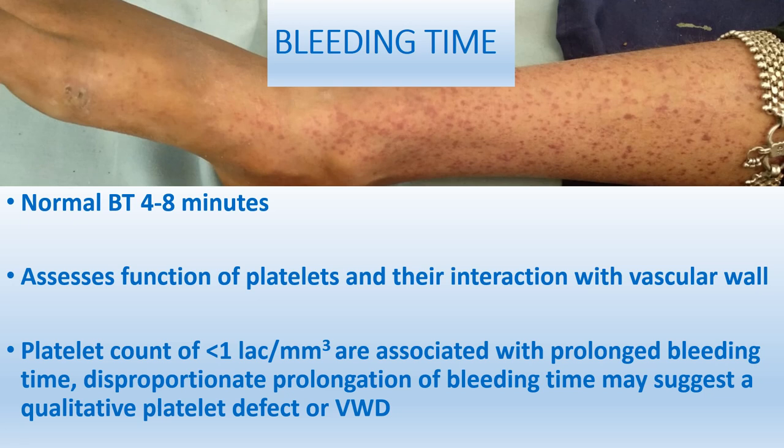Bleeding time is a bedside test with a normal value of 4 to 8 minutes. It assesses the function of platelets and their interaction with the vascular wall. When there is disproportionate prolongation of bleeding time with a normal platelet count, it may suggest a qualitative platelet defect or von Willebrand disease.